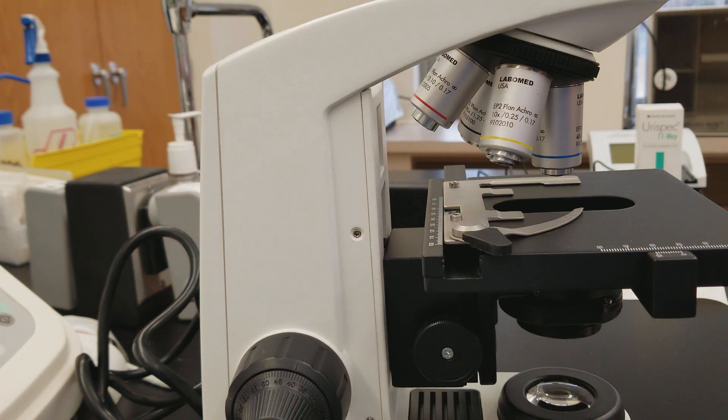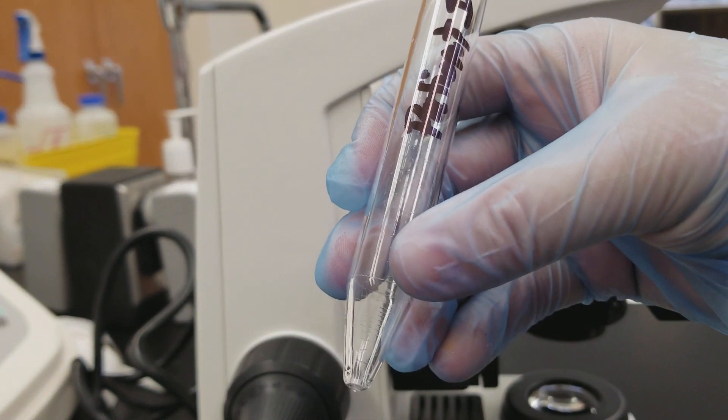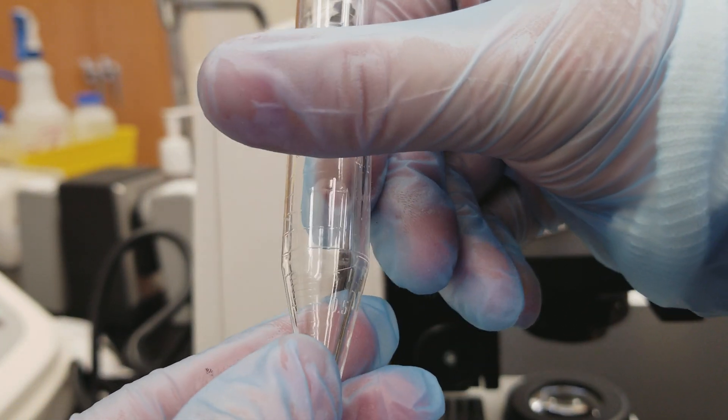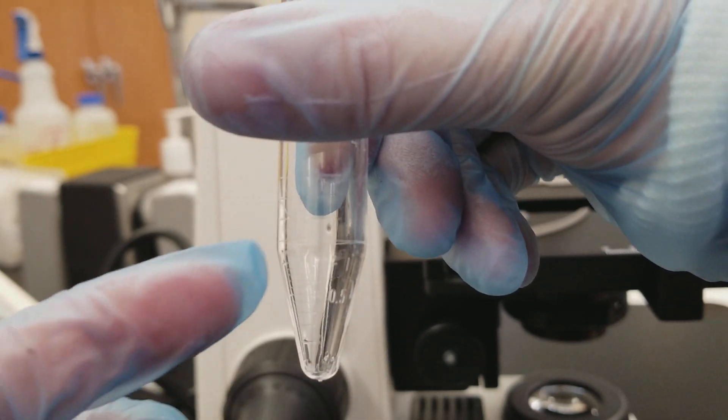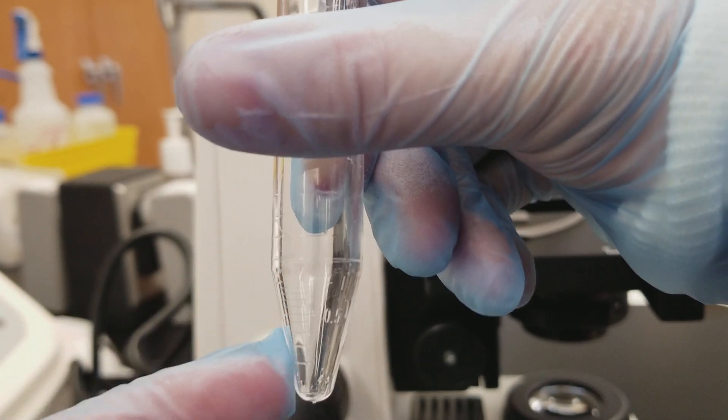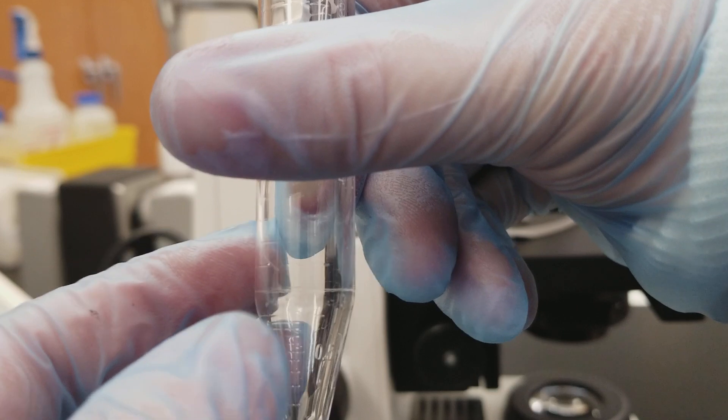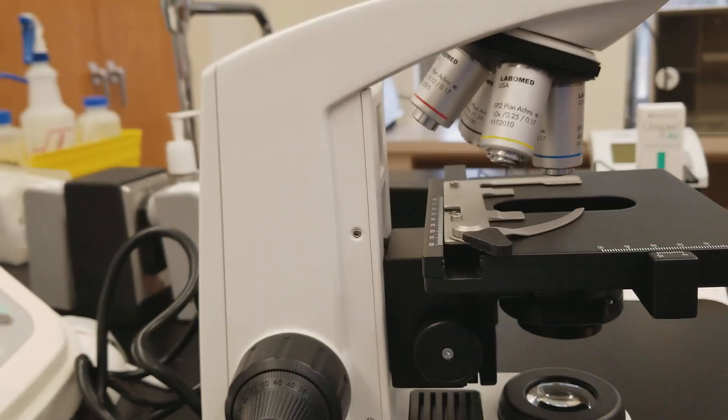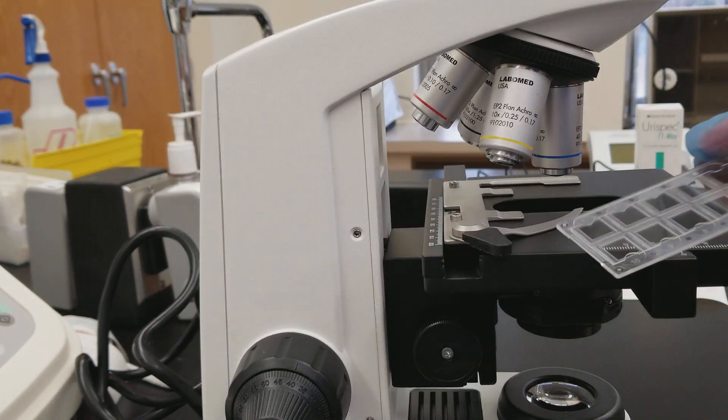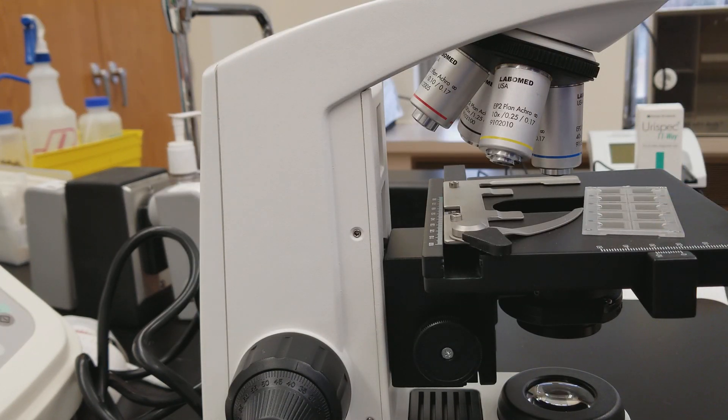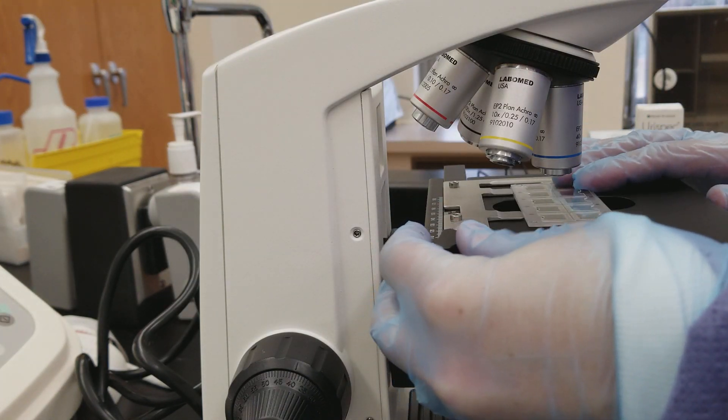And so what you do is you spin the urine down as we're doing right now in the centrifuge. And you take the supernatant off until the specimen is down to one mil down here. And everything that's down here is going to then be resuspended. And we put that resuspended suspension in here when it's on the stage, the microscope.